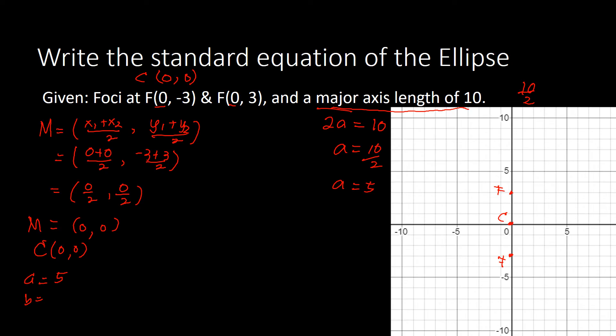If we plot this, from center (0,0) we count 5 units up to one vertex and 5 units down to the other vertex, confirming vertical orientation. Next we need to find B. From the center toward the focus, the measure is C. Counting the units from center to foci: 1, 2, 3 — so there are 3 units, meaning C = 3.